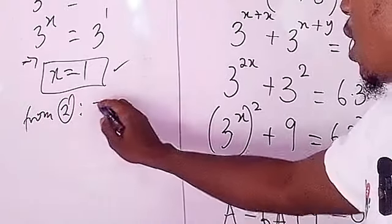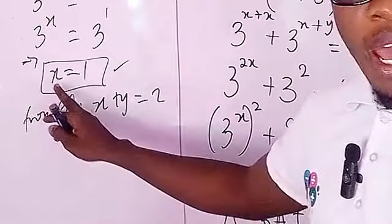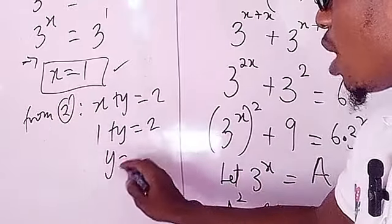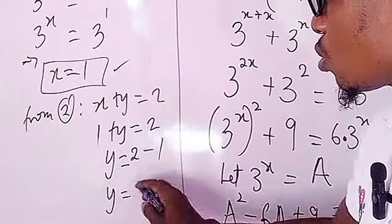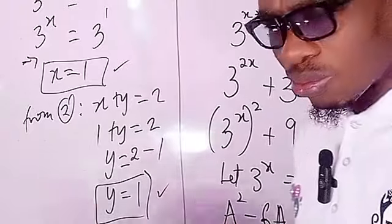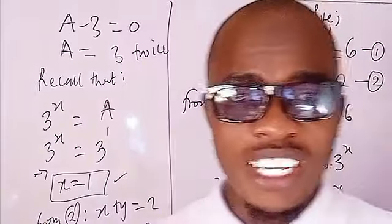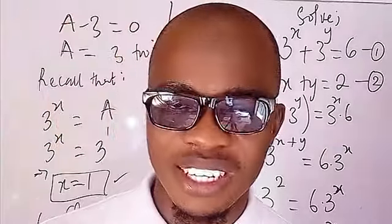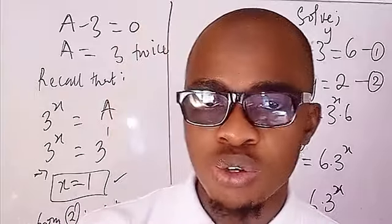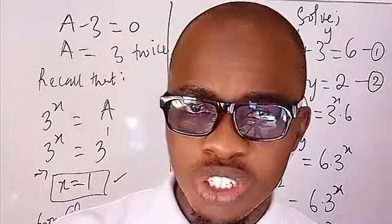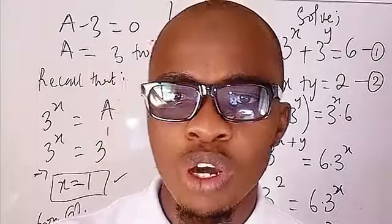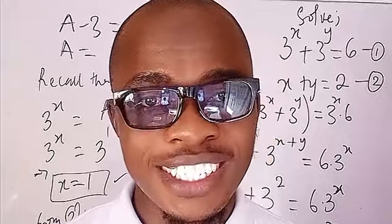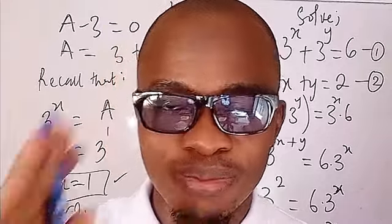Now put x equals one into equation two, where x plus y equals two. Substituting: one plus y equals two, so y equals two minus one, therefore y equals one. And that's the solution: x equals one and y equals one, just as stated from the beginning. If you enjoy this class, please share with your friends, subscribe to our YouTube channel, hit the bell icon, and follow our Facebook page for more classes. Thank you, bye.